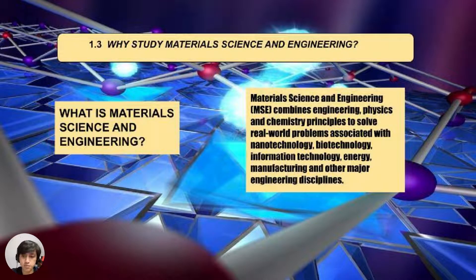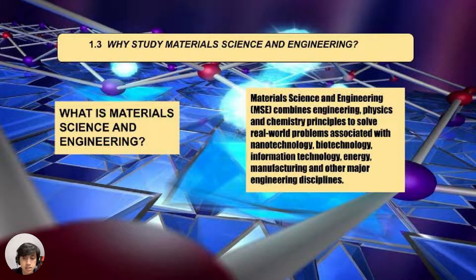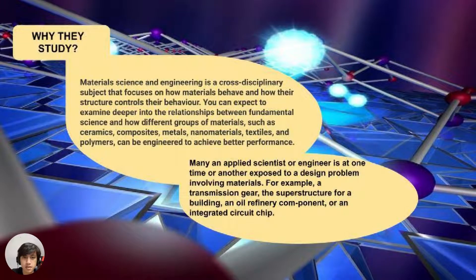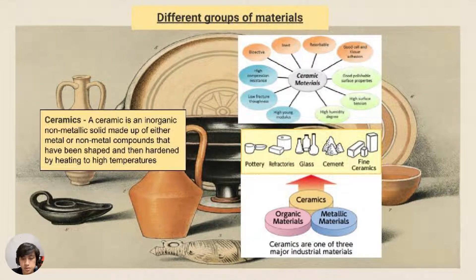Next, why do we need to study material science and engineering? It is a combination of material science, engineering, physics, and chemistry used to solve real-world problems. It encompasses many things, for example nanotechnology. Next are the groups of materials.